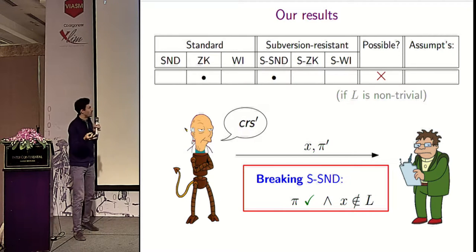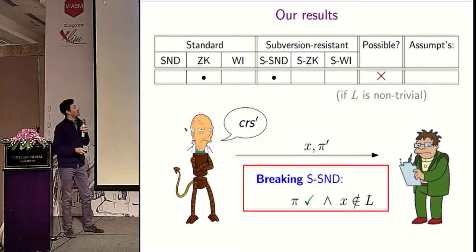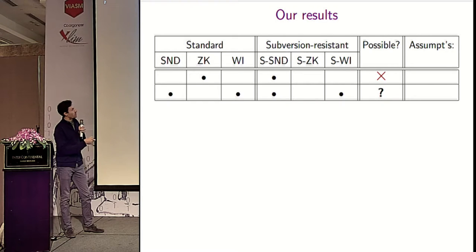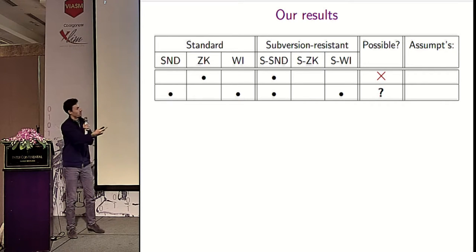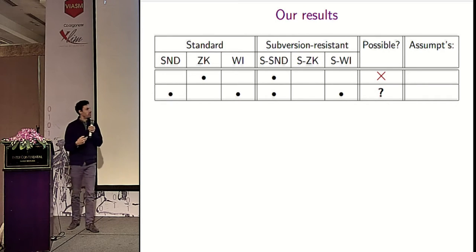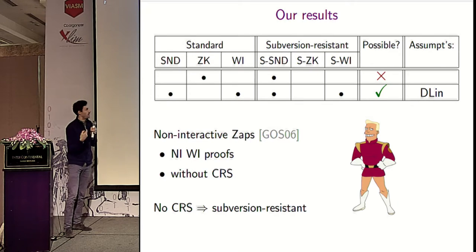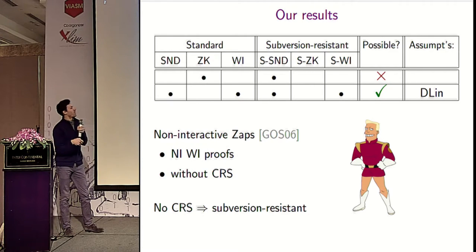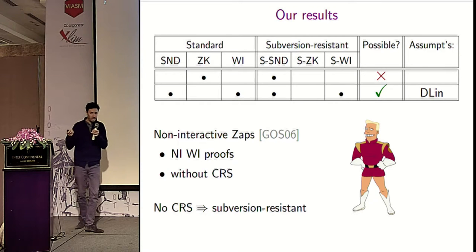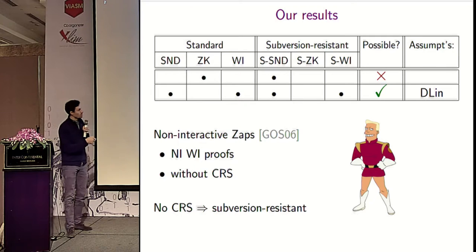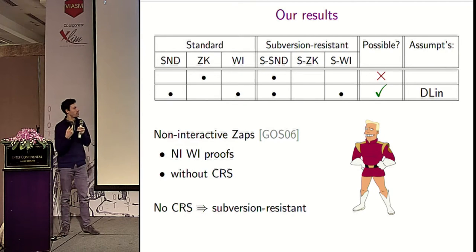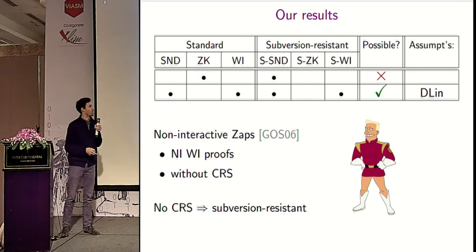The next question is whether something can be achieved. If we really want subversion soundness, we know we cannot have zero knowledge or subversion zero knowledge — but can we have subversion witness indistinguishability? It turns out this can be done. There is a scheme that achieves both: non-interactive SAPs, a non-interactive witness indistinguishable proof system with no CRS. If there is no CRS, there is nothing to subvert, so standard notions imply the subversion-resistant notions. Groth, Ostrovsky, and Sahai construct such a scheme under the decision-linear assumption, proving it is witness indistinguishable.